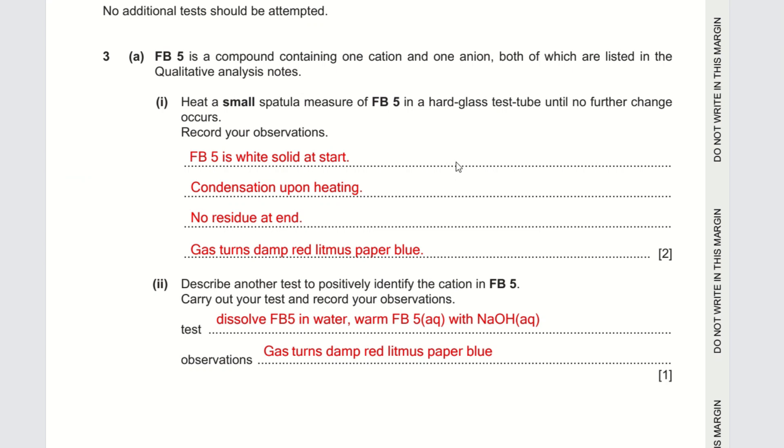This is an example from a past paper. FB5 is a compound containing one cation and one anion, and in part (a)(i) we are asked to heat a small spatula of FB5. FB5 is a white solid at start.